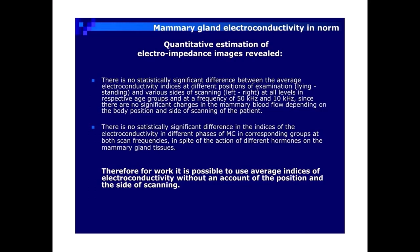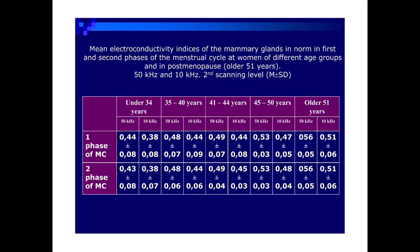Since there are no significant changes in the mammary blood flow depending on the body position and side of scanning of the patient, there is no statistically significant difference in the indices of the mammary gland electroconductivity in norm, or in electroconductivity in different phases of the menstrual cycle in corresponding groups at both scan frequencies, in spite of the action of different hormones on the mammary gland tissues. Therefore, it is possible to use average indices of electroconductivity without an account of the position and the side of scanning.